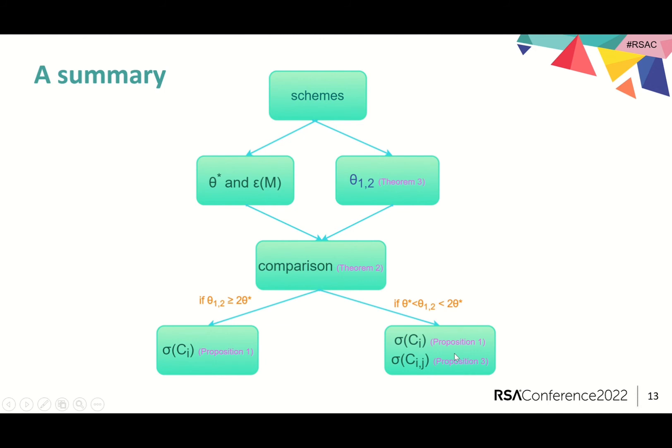On the other hand, if theta_{1,2} is larger than theta star and smaller than 2 theta star, we also need to use Proposition 3 to calculate the proportion of the surface area of the intersection.